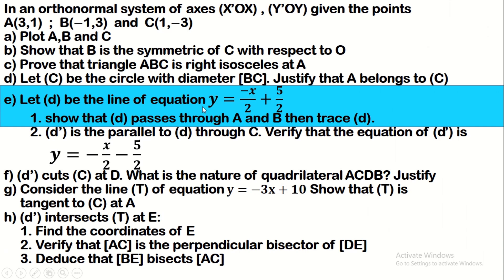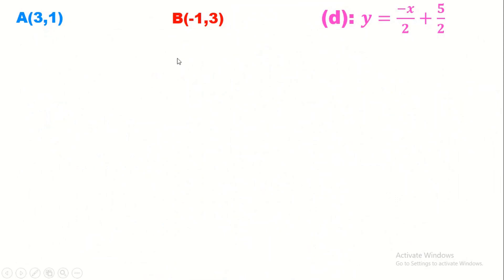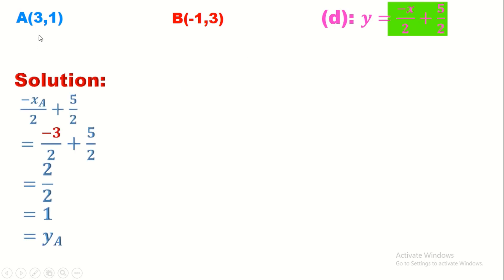Let D be the line with equation y = -x/2 + 5/2. We need to show that D passes through A and B. We have two points to verify on line D. We check whether the coordinates of A and B satisfy the equation. For A: -xA/2 + 5/2 = -3/2 + 5/2 = 2/2 = 1, which equals yA. So the coordinates of A satisfy the equation of D.